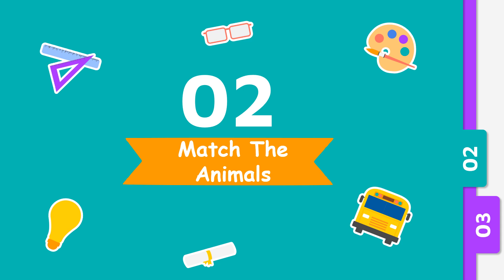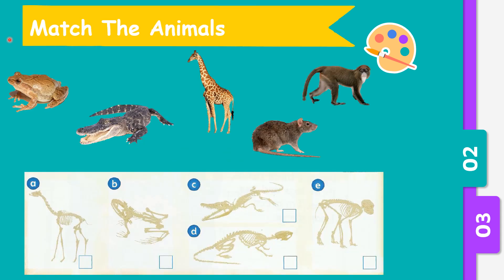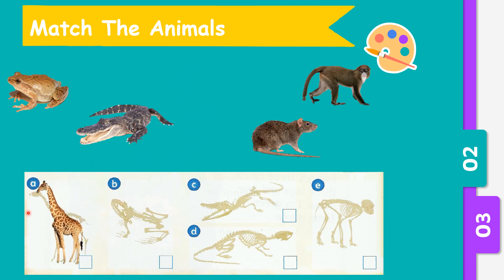So now let's try to match the animals with the skeleton. We have frog, crocodile, giraffe, rat, and monkey. So, A — what animal is this? Very good, it's a giraffe. What about this skeleton for B? Which animal is it?